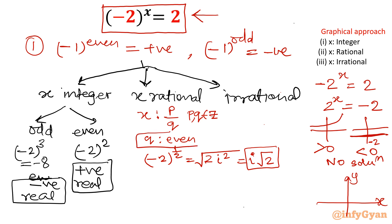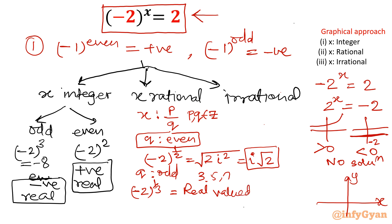Now the second case: when Q is odd — like 3, 5, 7. The function would be (-2)^(1/3), and we get a real value — specifically a negative real value. So the constraint is: if Q is even, we always get an imaginary or complex solution. If Q is odd, we get a real negative solution.